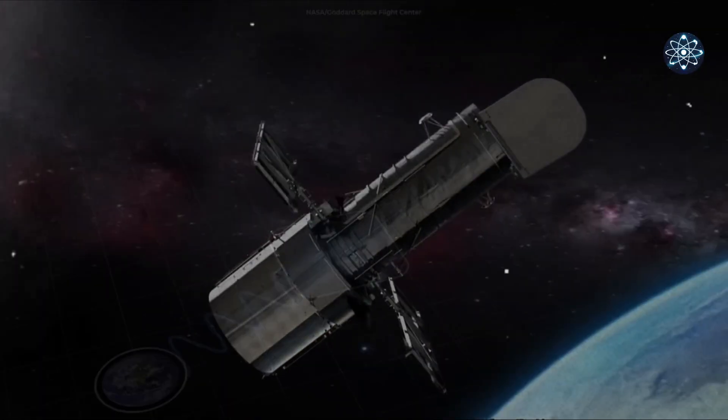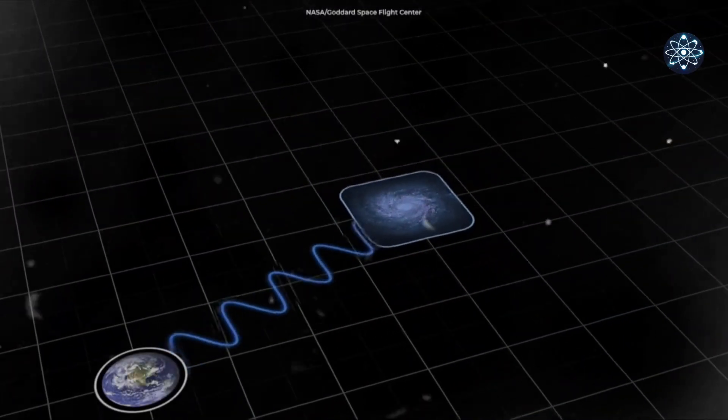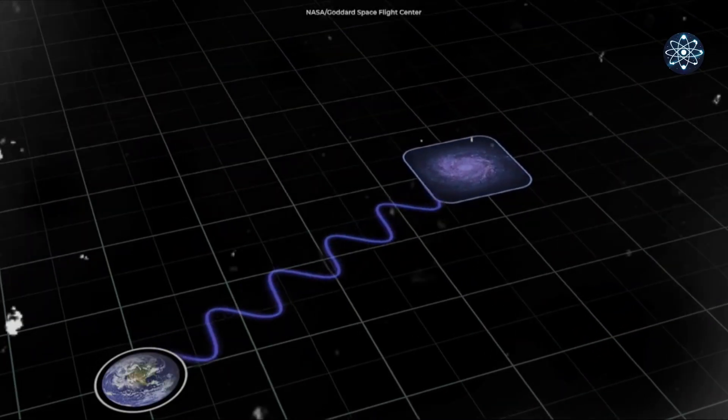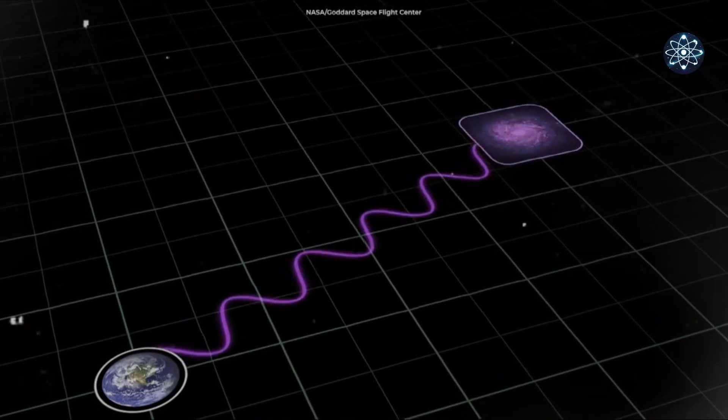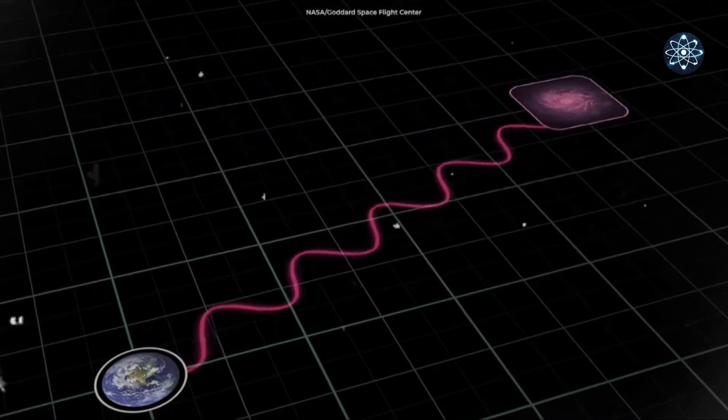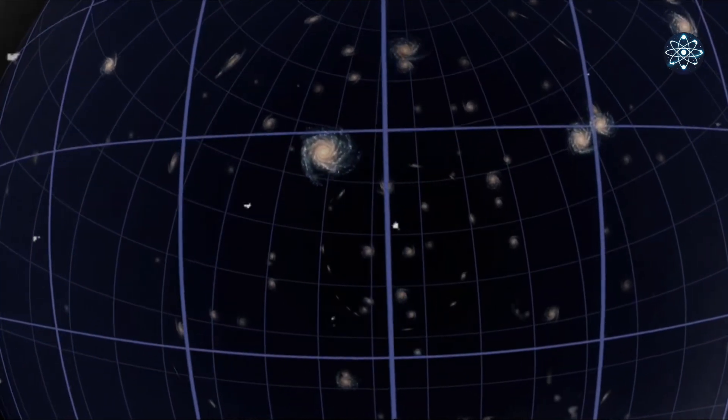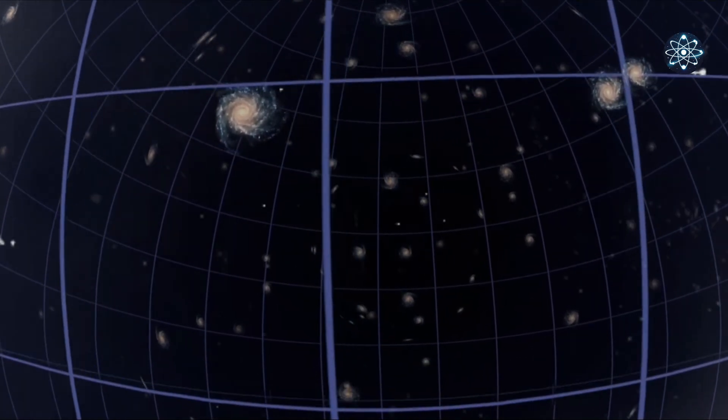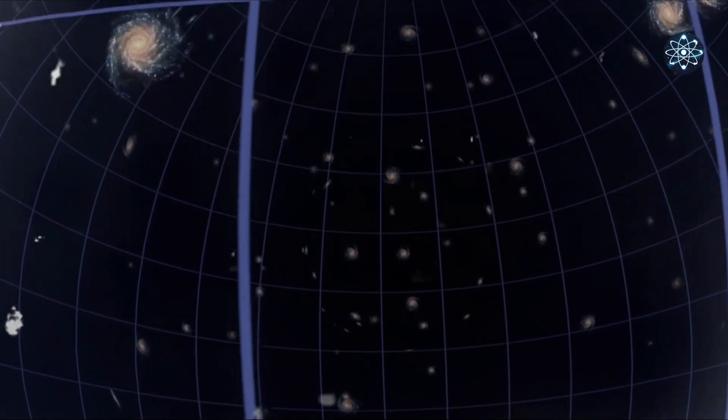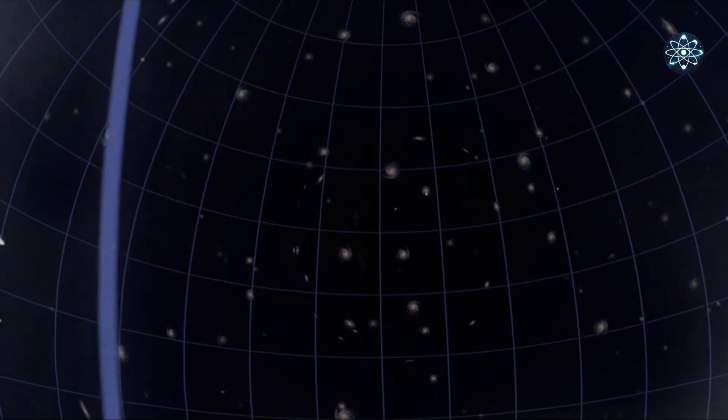Just like a balloon inflating, even light that can reach us within the observable universe gets stretched out as the universe expands. This stretches visible light into infrared or even microwave wavelengths, rendering it invisible to the human eye. That's one of the reasons why we perceive the universe as dark.